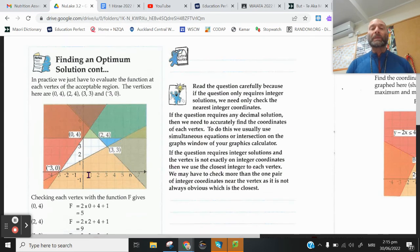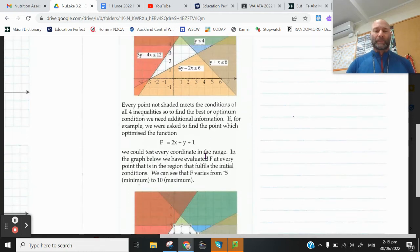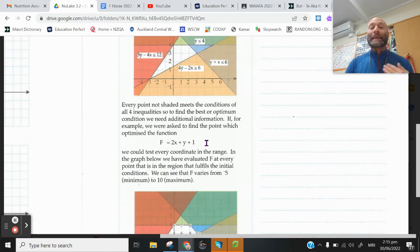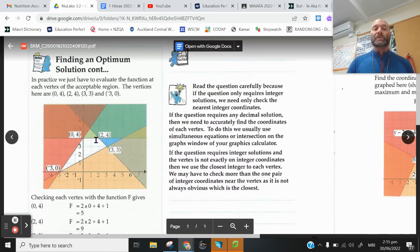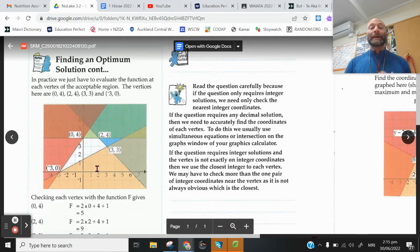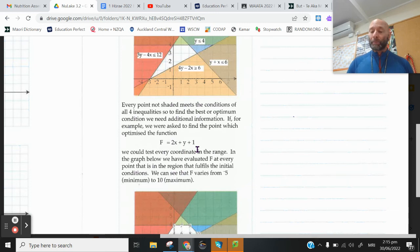Now we're going to do something with those. With each problem you will be given an equation. This equation is known as the optimizing equation and it will be given to you. The way these work is the corners of the feasible region represent the points that you are going to need to one at a time plug in to the optimizing function or equation. So we see f equals 2x plus y plus one.